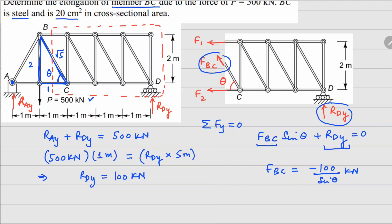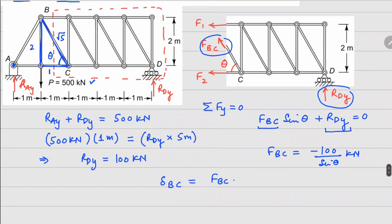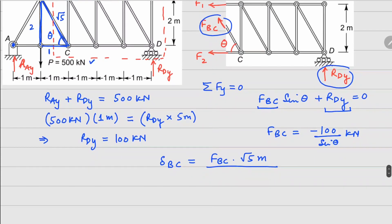The deflection in member BC will be your force fbc times the length of BC member, which is square root of five meters, divided by the elastic modulus and your cross-section area.